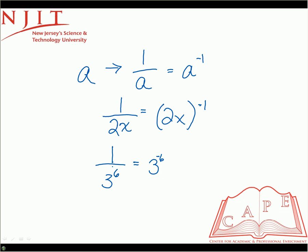And then this also can be expressed as, if you had, say, 1 over a, or let's say, use the same expression, 1 over 3 to the 6th,